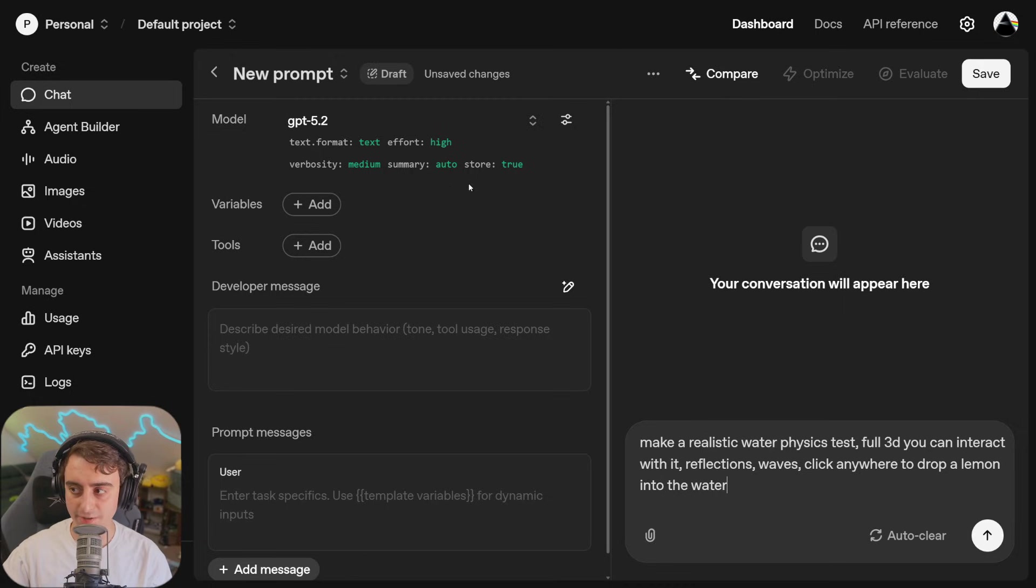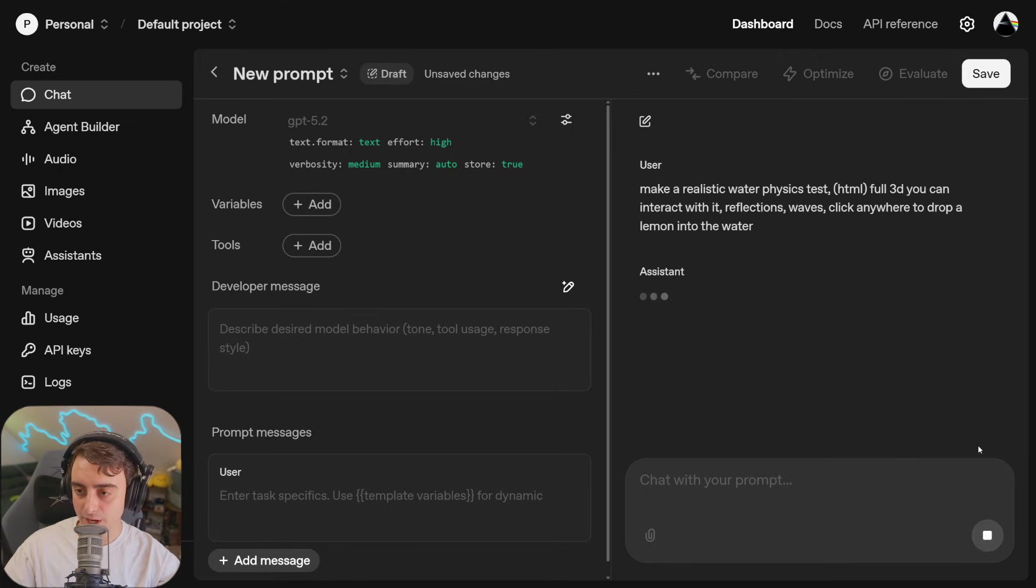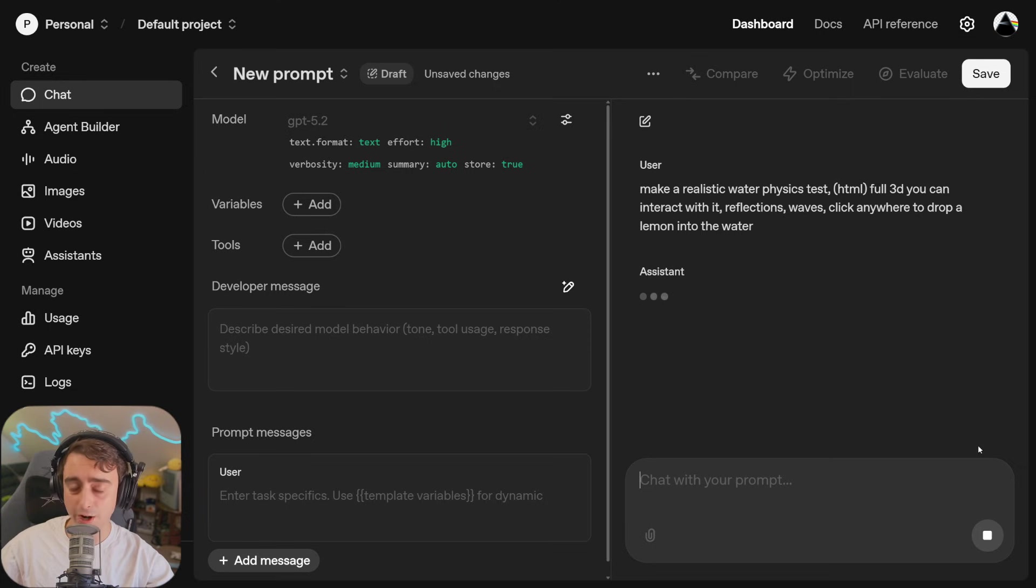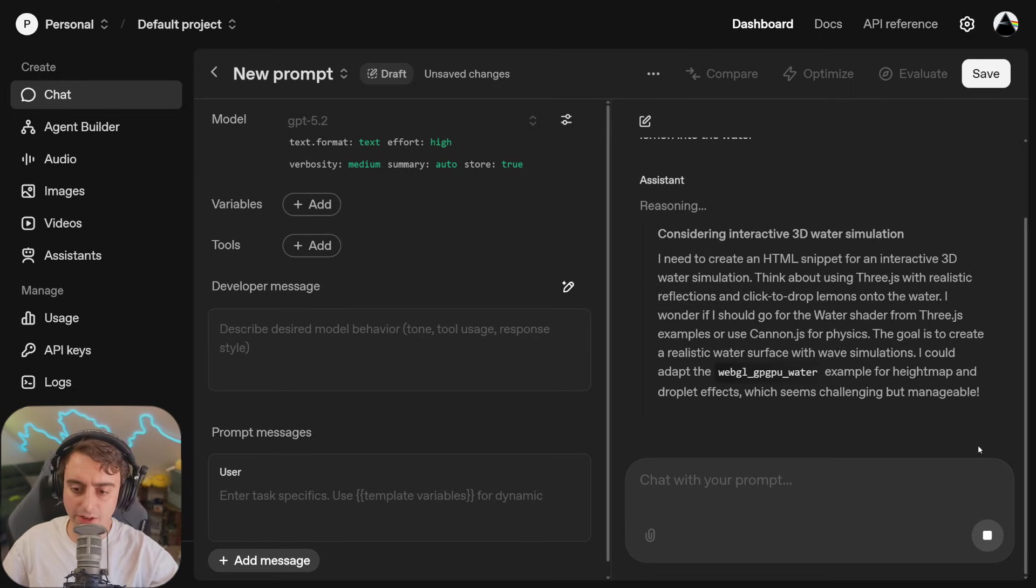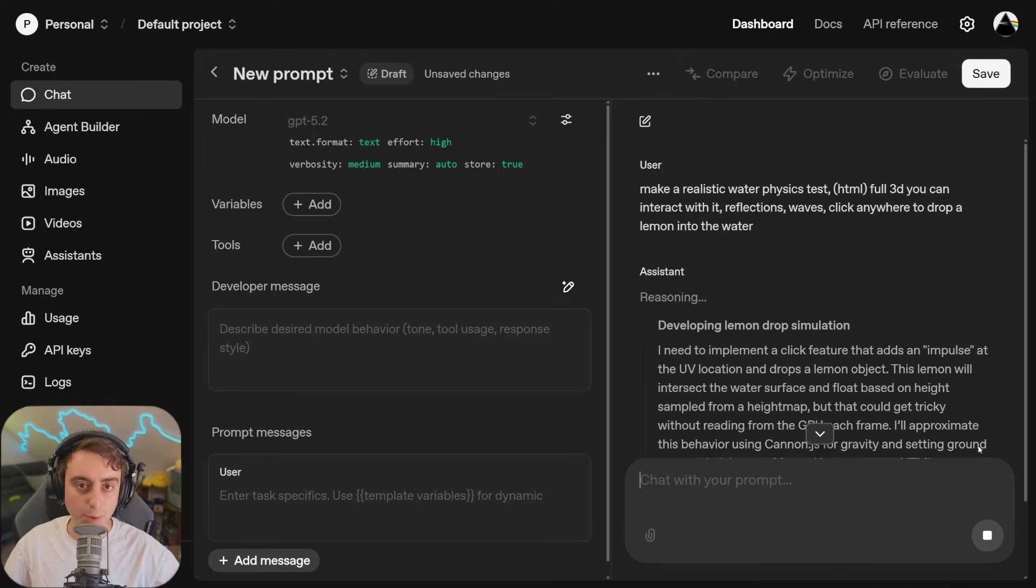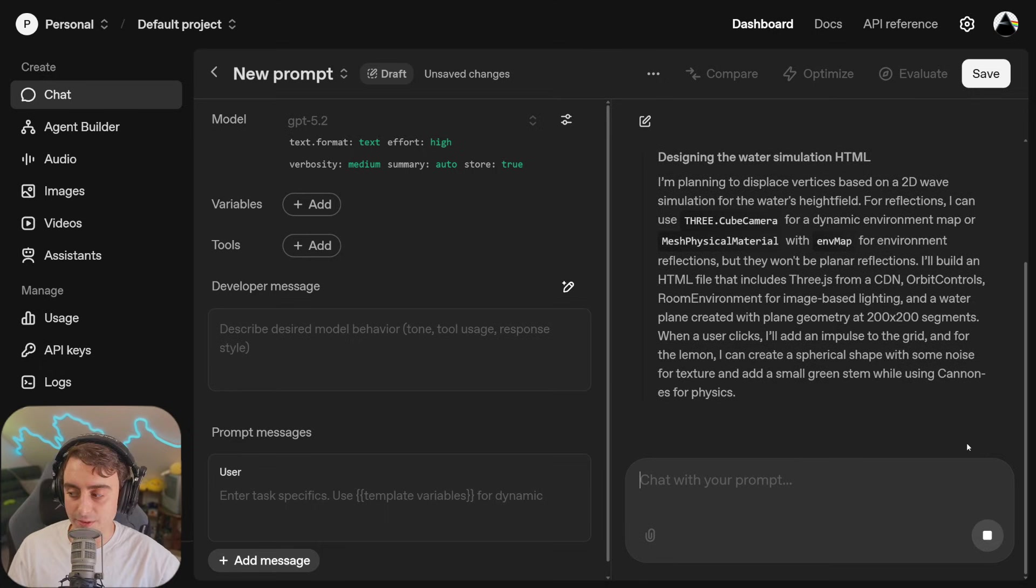All right, in the API, I've set the reasoning effort to high. We want to make a realistic water physics test, HTML. Full 3D, you can interact with reflections, waves, click anywhere to drop a lemon into the water. We tested this prompt on Gemini 3, and it did very good at one shot for me, but I had some users in the comments and on X say that they tried the same exact prompt and were having difficulties getting Gemini 3 to produce a good result every time. This is not an easy prompt, even for Gemini 3, so we'll see how 5.2 handles it.